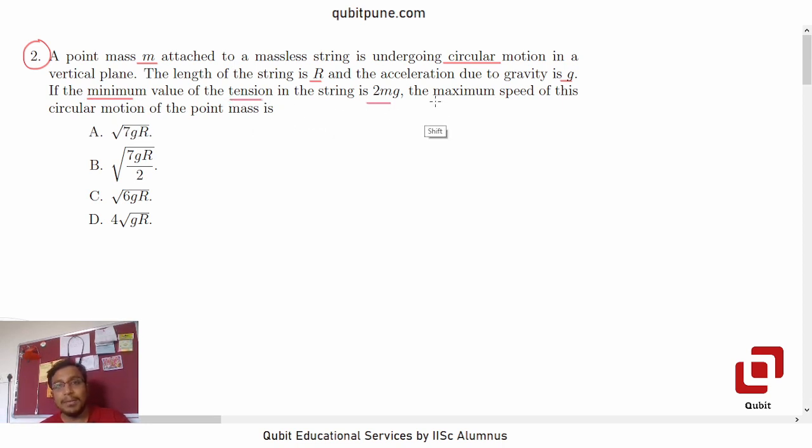the maximum speed of this circular motion of the point mass is: root of 7gR, root of 7gR by 2, root of 6gR, and 4 under root gR.